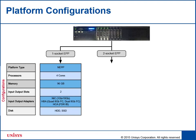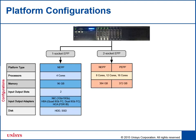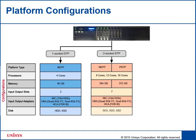Two socket EPP is available for both NEPP and PEPP platform types, and consists of 8, 12 and 16 core processors, with 384 GB of memory for NEPP and 372 GB of memory for PEPP. This platform configuration has seven input-output slots and uses input-output adapters such as NIC of either 1 Gigabits or 10 Gigabits, HPA of Quad 8 Gigabits and Dual 8 Gigabits Fiber Channel, and HCA of FDR Infini Band. This platform has three types of disks: Self Encrypting Drive or SED, HDD, and SSD.